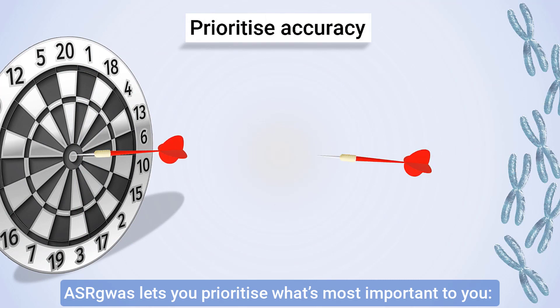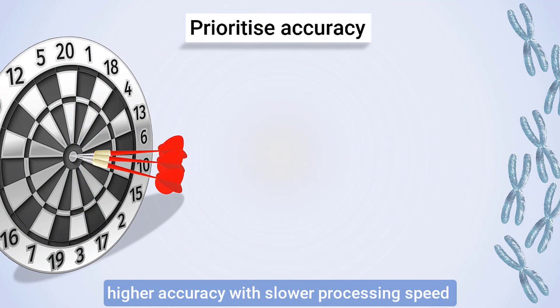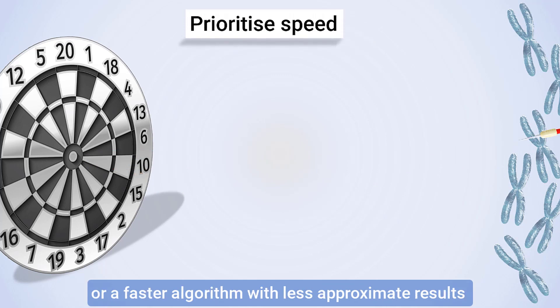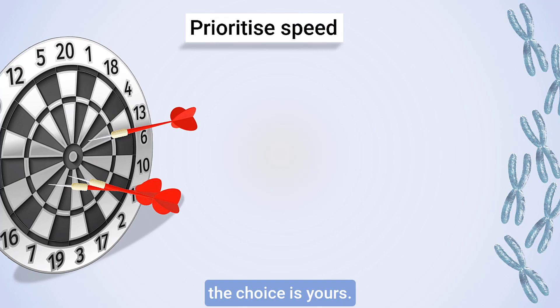ASR-GWAS lets you prioritise what's most important to you – higher accuracy with slower processing speed, or a faster algorithm with less approximate results. The choice is yours.